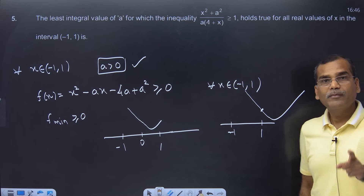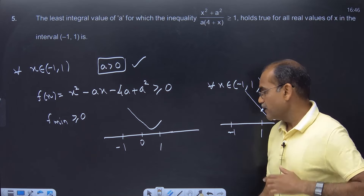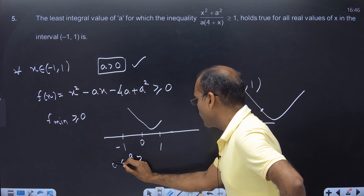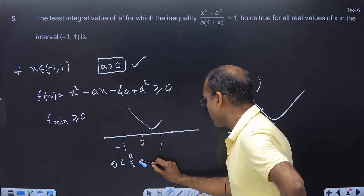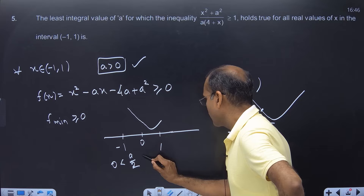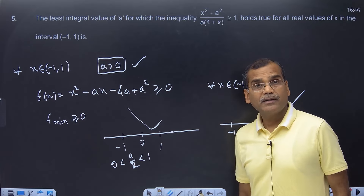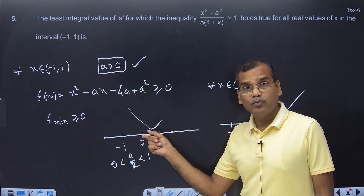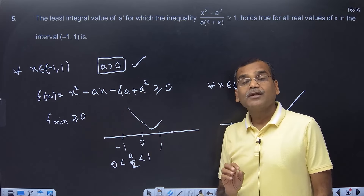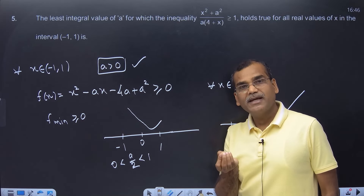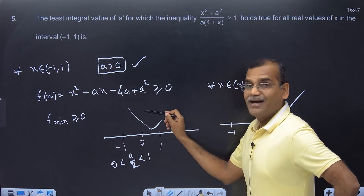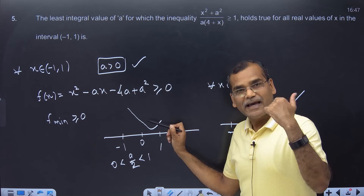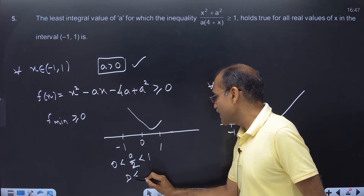So the problem splits into two cases. Case 1: if a/2 is between 0 and 1, then your idea is to make f(a/2) ≥ 0. And some smart people will also note that making the vertex value ≥ 0 is equivalent to saying discriminant ≤ 0.